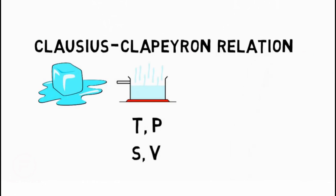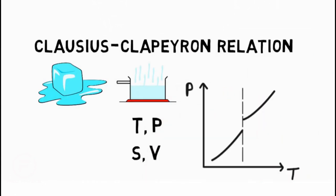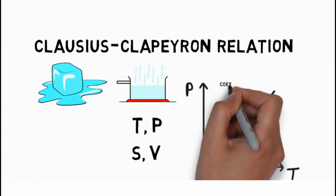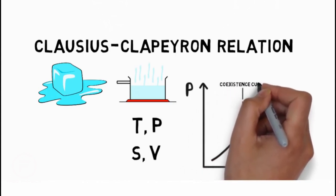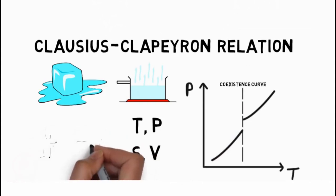The Clausius-Clapeyron relation helps in differentiating a discontinuous phase transition between two phases of matter denoted by a coexistence curve on a pressure-temperature diagram. It does so by giving the relation between the slope of the tangents to this coexistence curve.